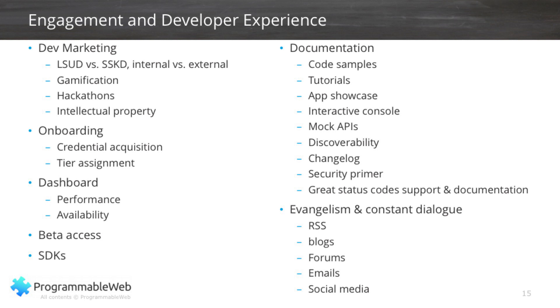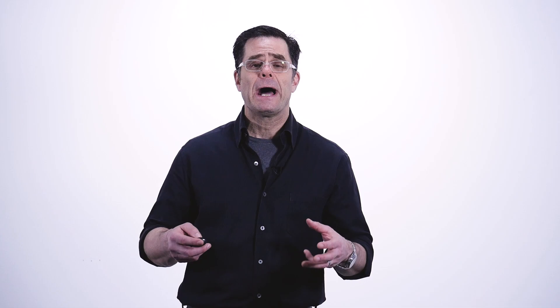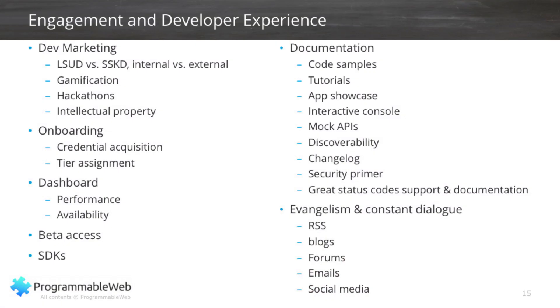Onboarding — how is it that you're going to get developers to start using your API? How do they get the credentials? What automated system do you have in place? What forms do they have to fill out to become a partner? How do you assign tiers based on their level of engagement? What are the dashboards available to developers so they can see how the API is functioning, its performance, and its availability? How do developers get access to your beta programs? Developers love beta programs — and that's one of your key ways of getting feedback when you're starting to build out a new API.